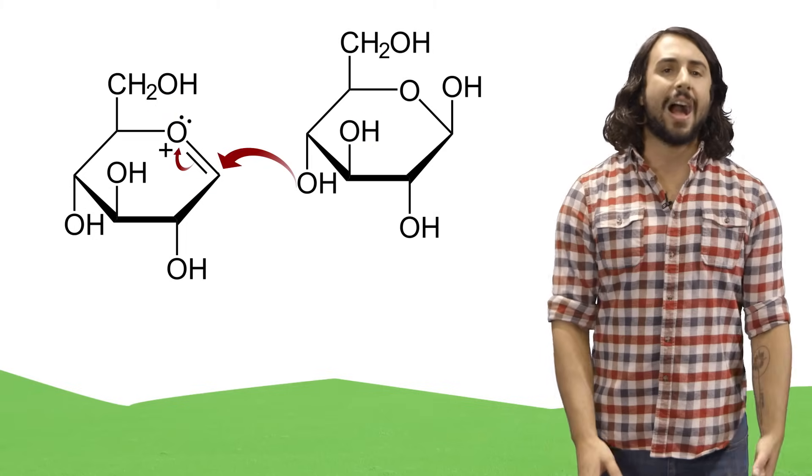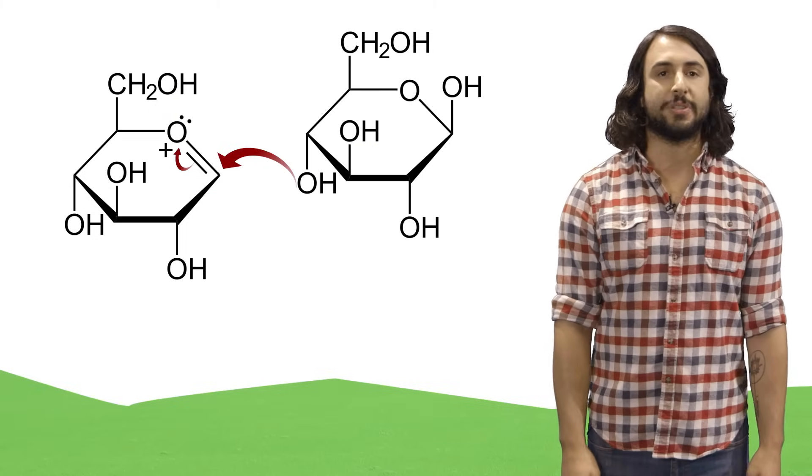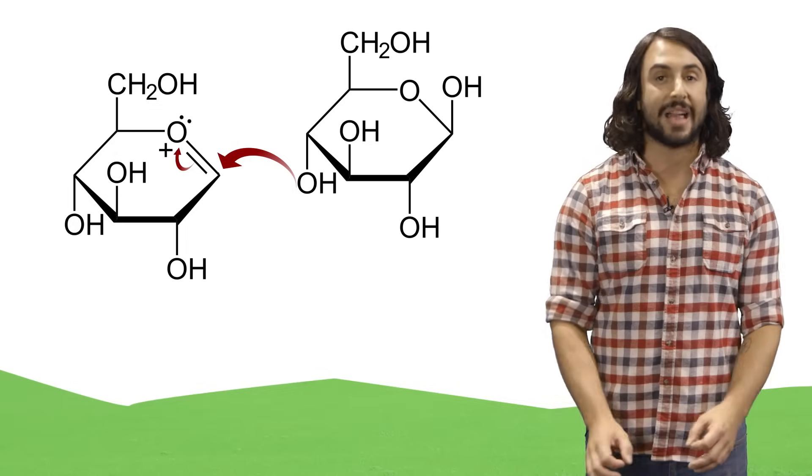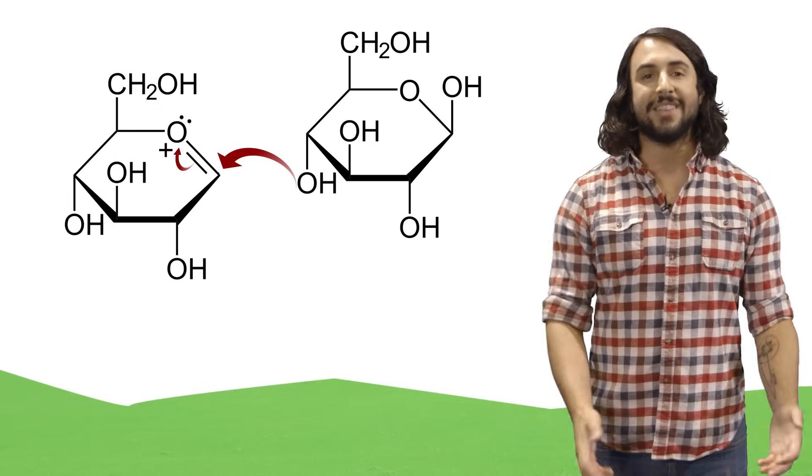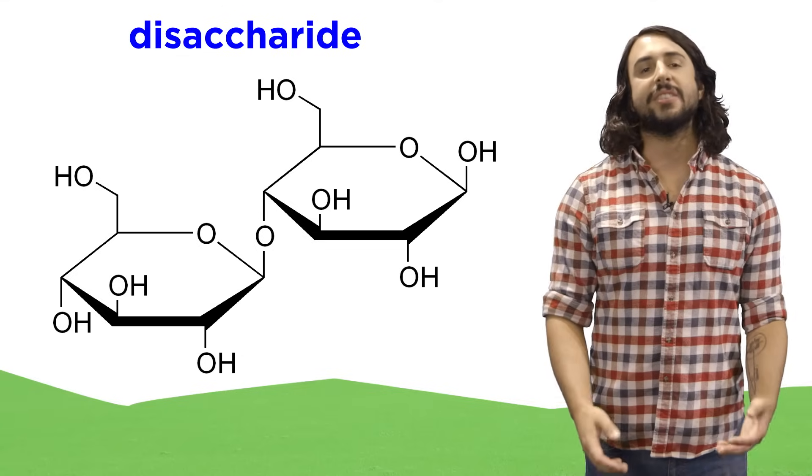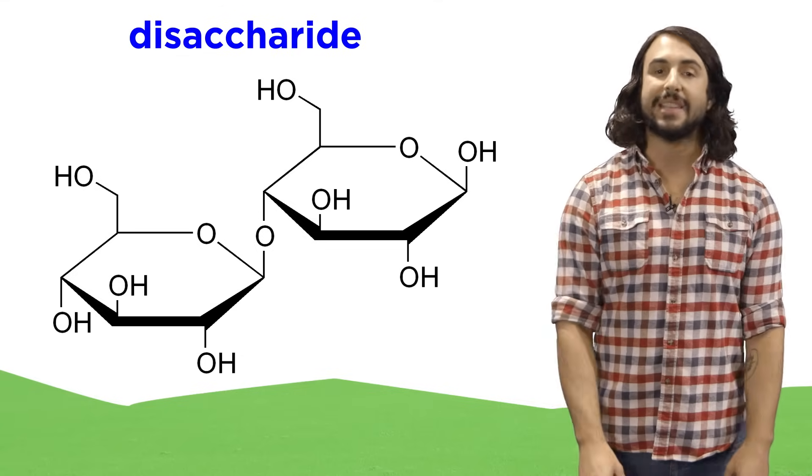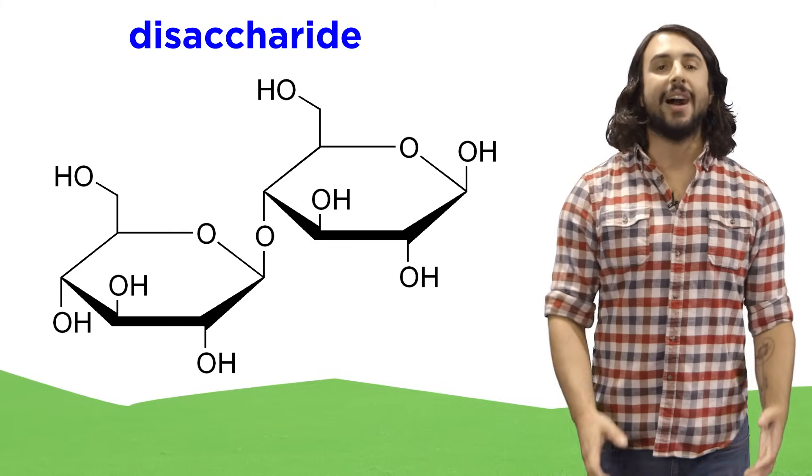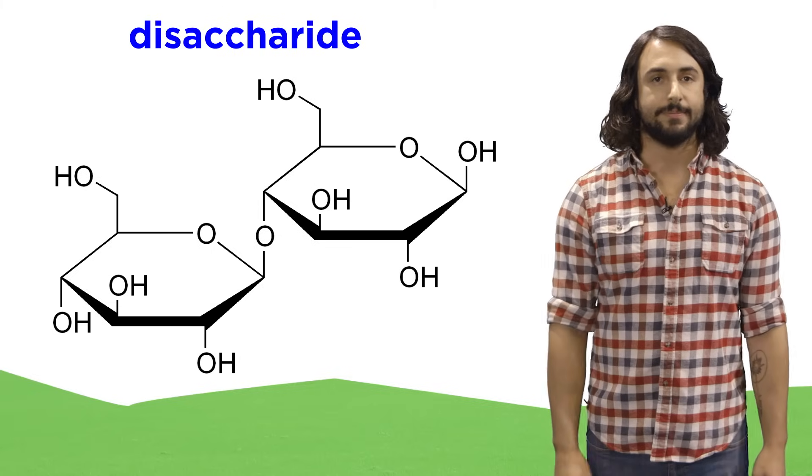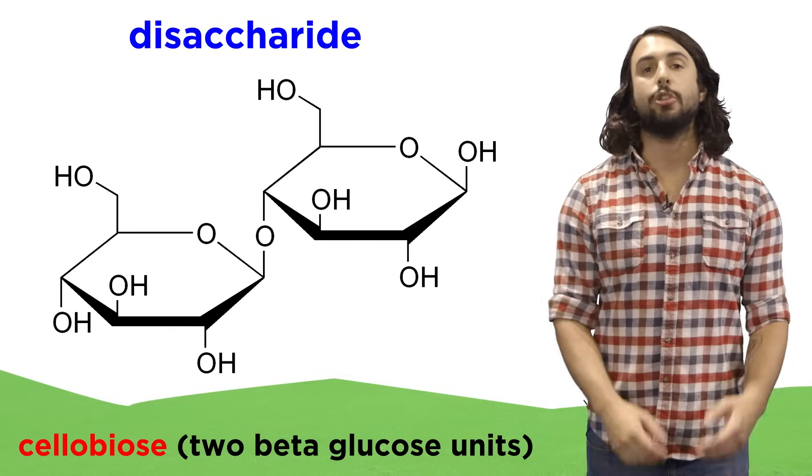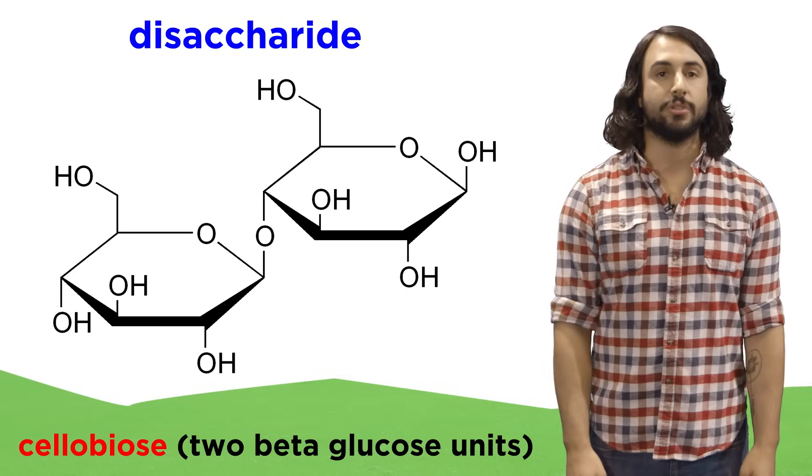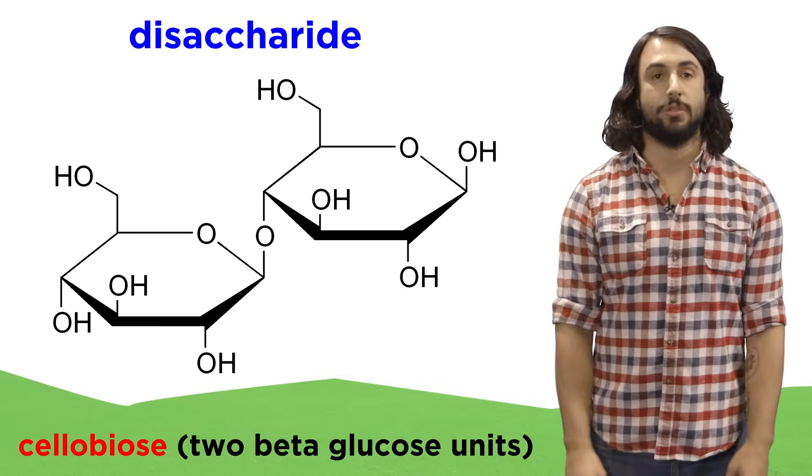But if the alcohol that attacks is one of the hydroxyl groups on another monosaccharide, we will get a disaccharide. This is still an acetal functional group, but it links two monosaccharides together via a glycosidic bond. Here we have a beta-glucose linked with another beta-glucose, which makes cellobios.